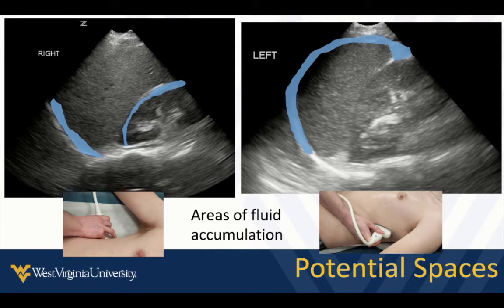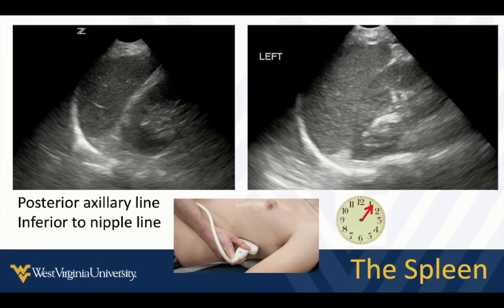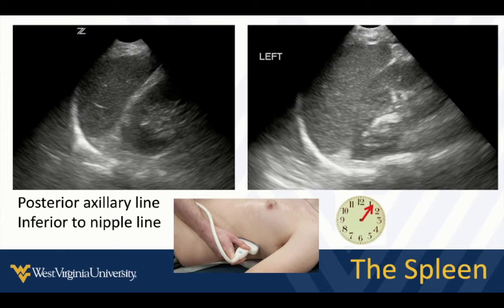Just highlighting and outlining our potential spaces where fluid may collect — this is where you're going to direct your eyes and attention. If you're ever evaluating the spleen itself, you'll note it's a nice crescent shape, homogeneous, with nice smooth borders, and it's roughly about the same size as the left kidney. Eyeballing whether the spleen is pretty much the same size as the left kidney is a good quick way to determine whether you have splenomegaly or not.